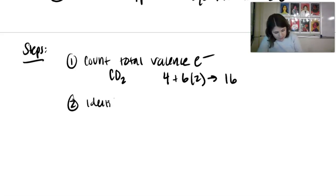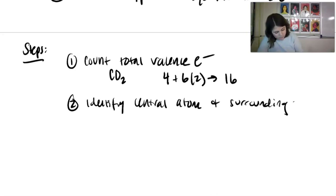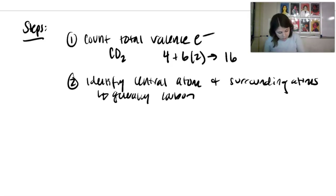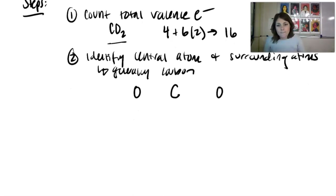Step two: identify your central atom and surrounding atoms. Generally in most cases it will be carbon. For our CO2 example, draw carbon in the middle with the oxygens on either side — this is called the skeleton structure.